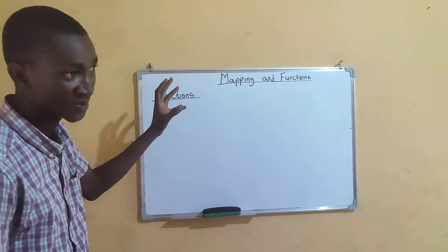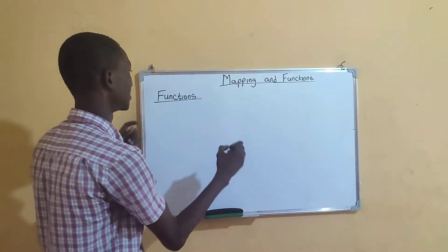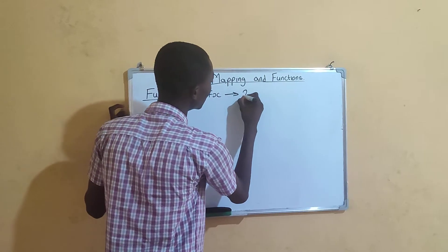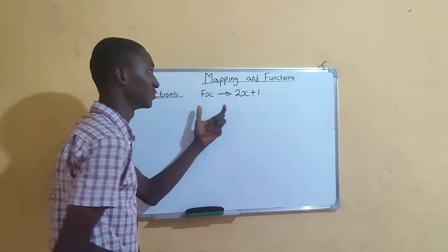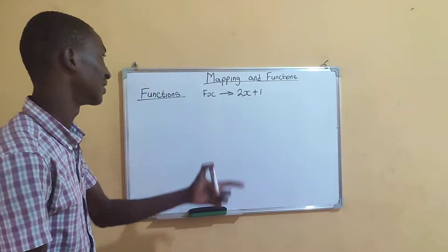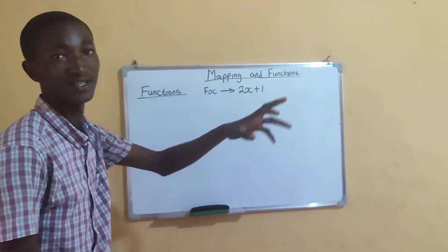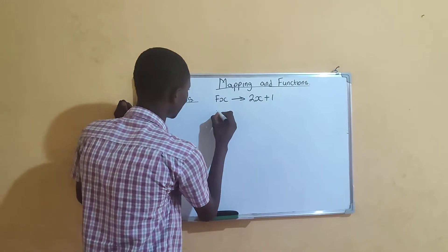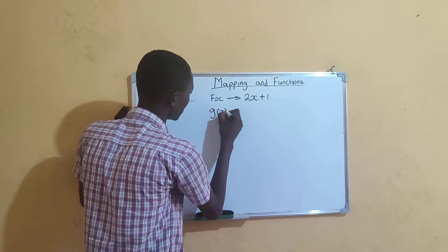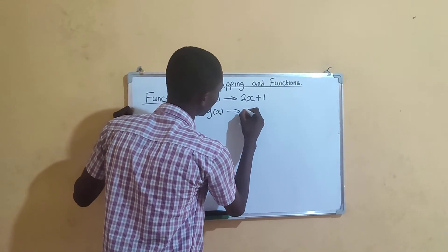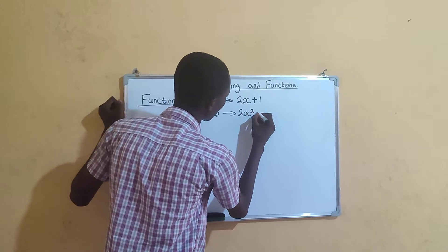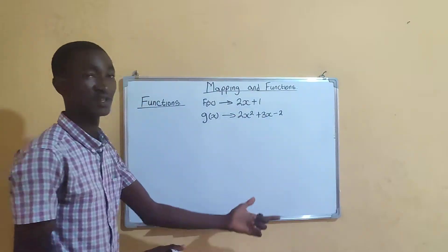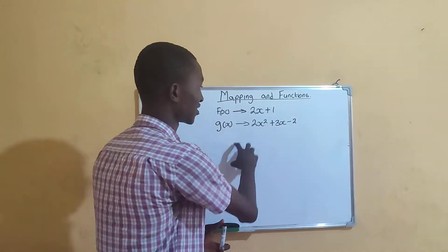A function is mainly represented as f(x). For example, f(x) = 2x + 1 is a linear function because the equation within it is a linear equation. There can also be a quadratic function, such as g(x) = 2x² + 3x − 2. This is a quadratic function because it has a quadratic equation attached to it.